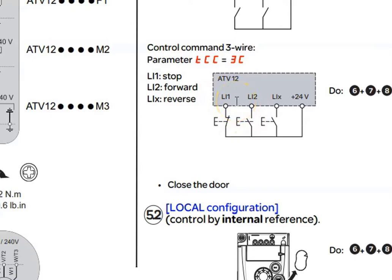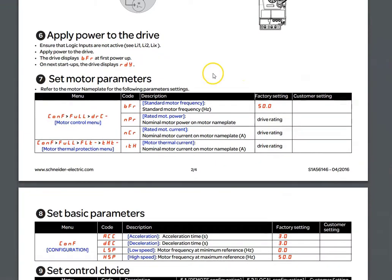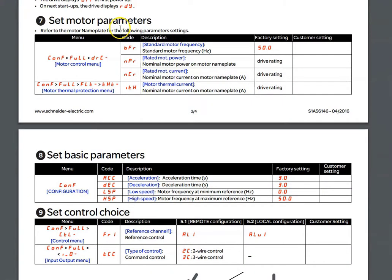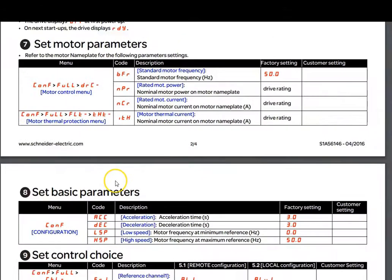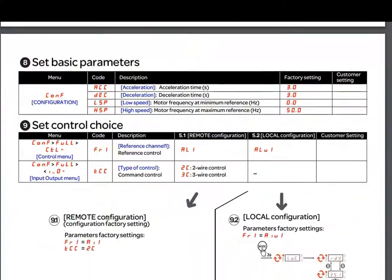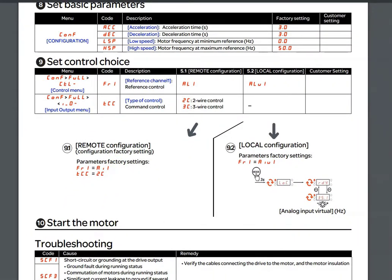So we'll redraw it in the NEMA diagram. These diagrams that you're looking at in this quick start guide are IEC. Once we have it drawn, we'll wire it, and then we will set these motor parameters. We'll set the motor parameters, the basic parameters, the control choice, and we'll test it. Okay, let's get started with the drawing.